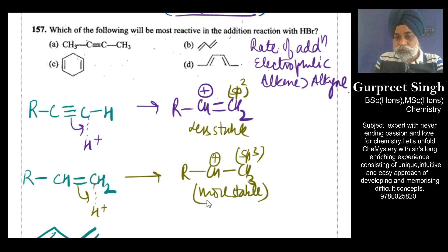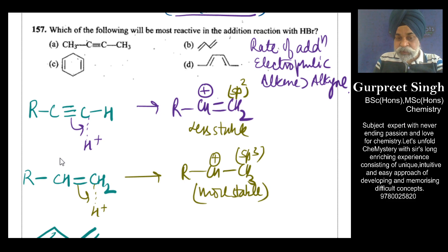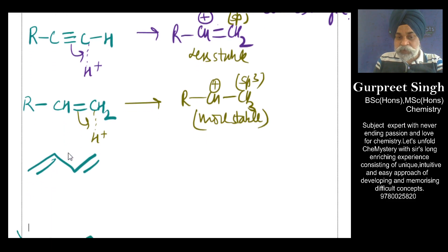So the carbocation formed in the case of alkene addition is more stable than that from alkyne addition — sp³ is more electron-releasing compared to sp². This is one reason alkenes react faster toward electrophilic addition than alkynes. The second reason is that the π bond in a triple bond is more strongly held compared to that in a double bond, so the nucleophilicity of the triple bond is slightly less than that of the double bond.